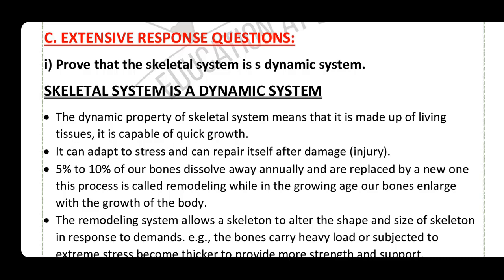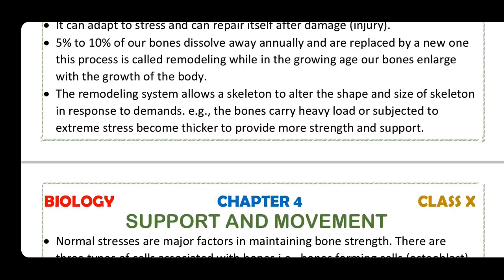During growing age, our bones enlarge with the growth of the body. The remodeling system allows the skeleton to alter the shape and size of the skeleton in response to demands. For example, bones that carry heavy loads become thicker to provide more strength and support.